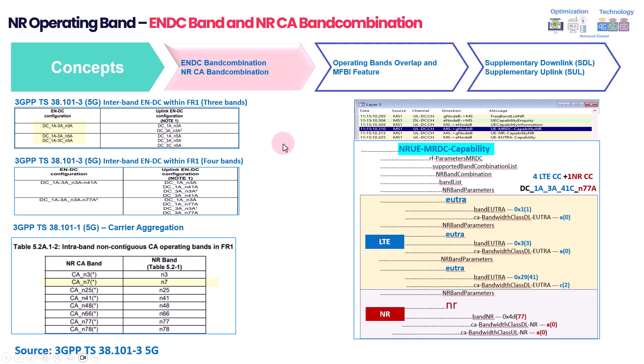The first part is a quick recap of NDC band combination aggregation: first, how to read it from the 3GPP tables, and second how to read it from the capability logs. For example, in this 3GPP table, this entry shows the NDC band combination — here you have DC dual connectivity 1A, 3A, and N3A — representing when you have three bands supported by the device.